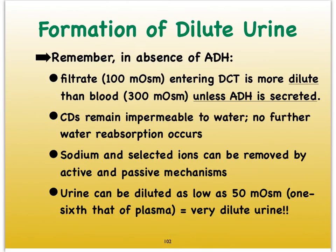Remember from the previous video, the filtrate that enters into the distal convoluted tubule is going to be hypotonic to the blood. It's only going to be at 100 milliosmoles, while our blood that enters or leaves the kidneys is always at 300 milliosmoles.